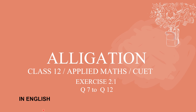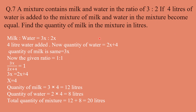We have discussed the allocation concept, and questions up to 6 have been covered in a separate video. Today we shall be doing questions 7 to 12. Now, a mixture contains milk and water in the ratio of 3:2. 4 liters of water is added to the mixture, and now the ratio of milk and water becomes 1:1. Find the quantity of milk in the mixture in liters.